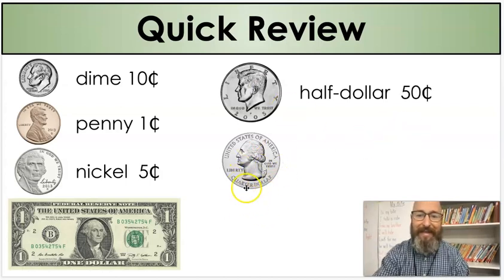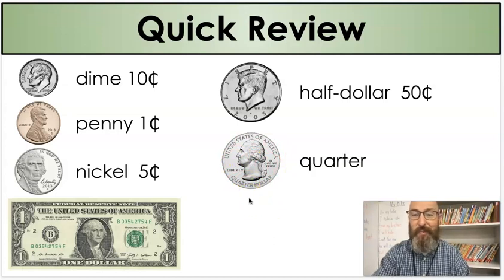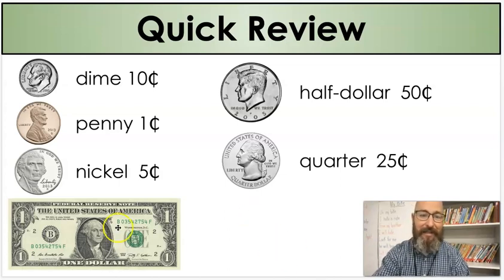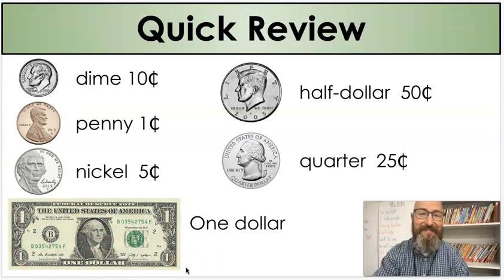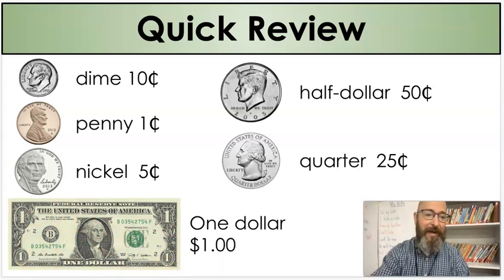And our last coin that we're going to look at today is this coin right here. What is the coin? It's a quarter. That's right. And how much is a quarter worth? 25 cents. That's right. And our last one down here, what is that? It's a one dollar bill. We see the one on each corner. And how much is a one dollar bill worth? One dollar. All right.